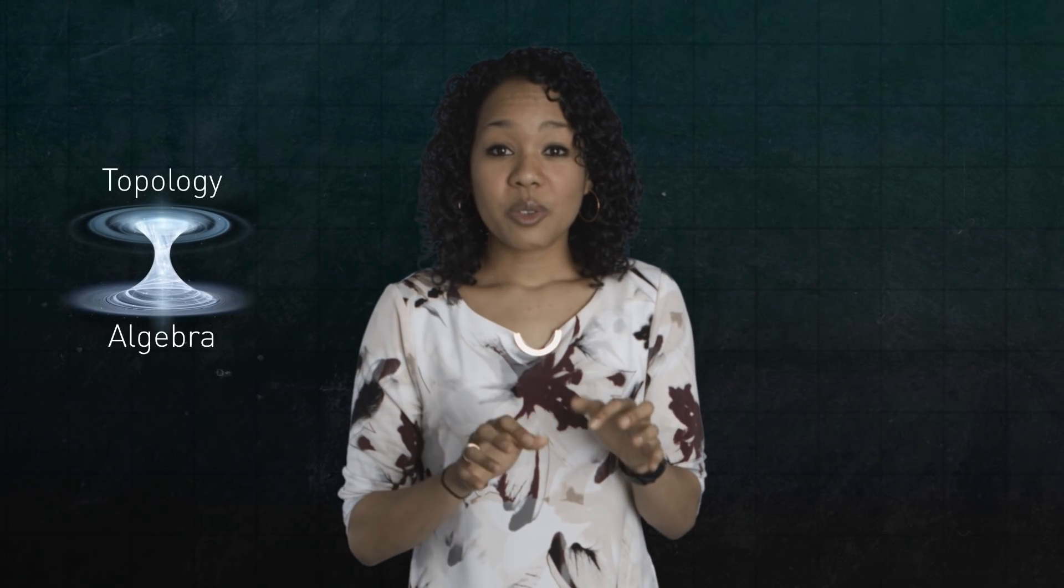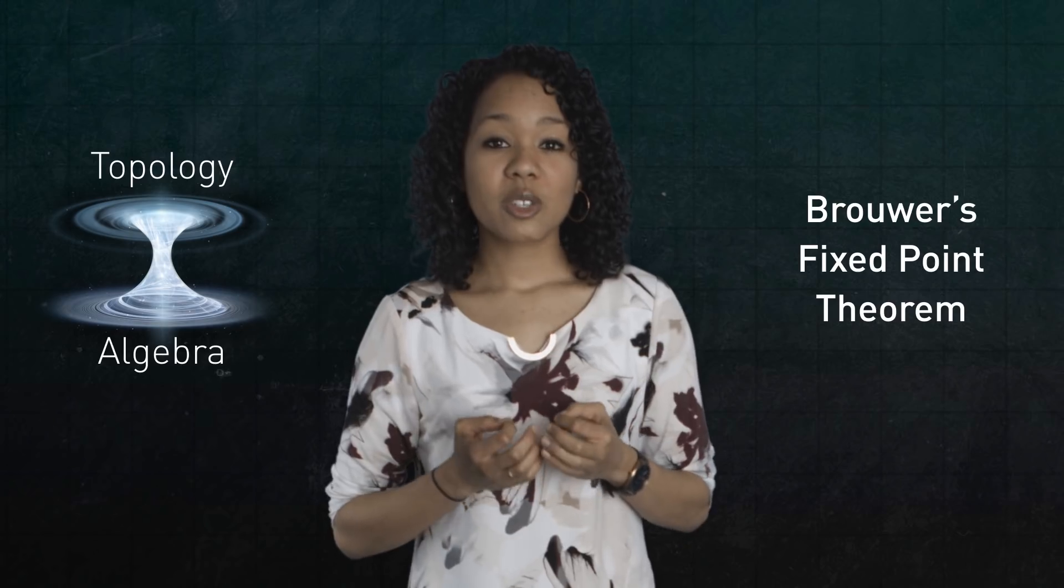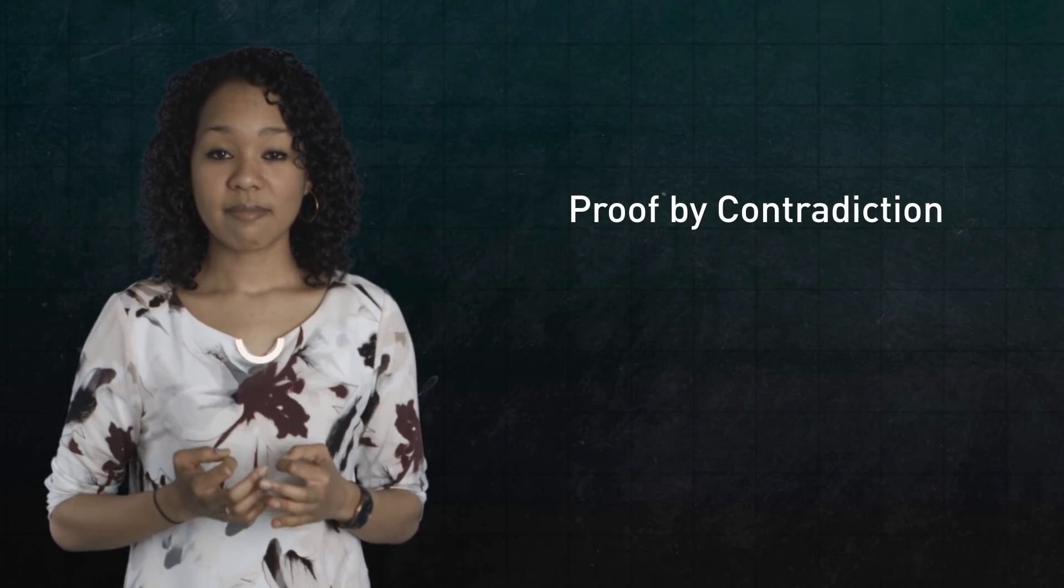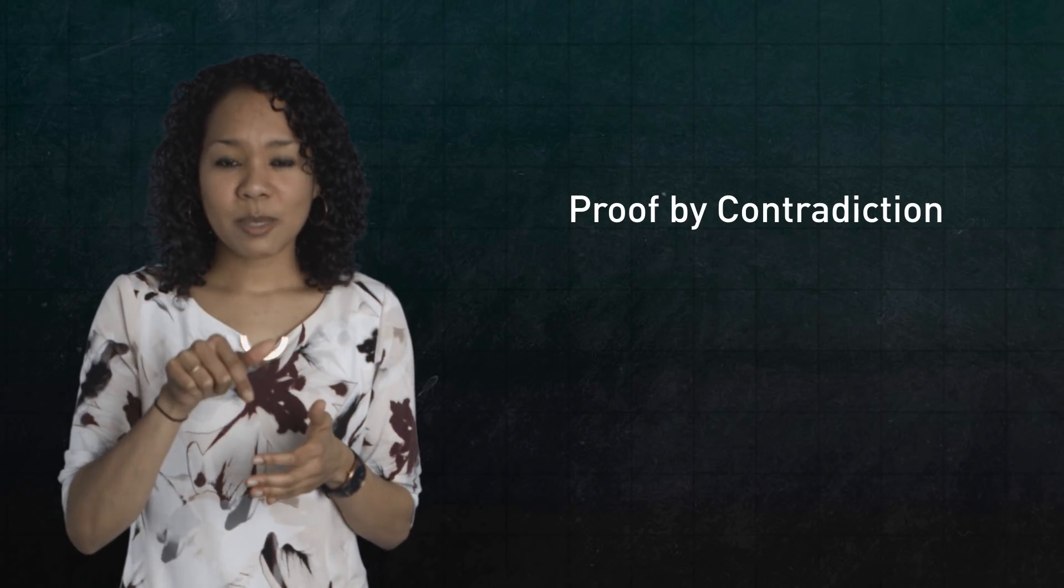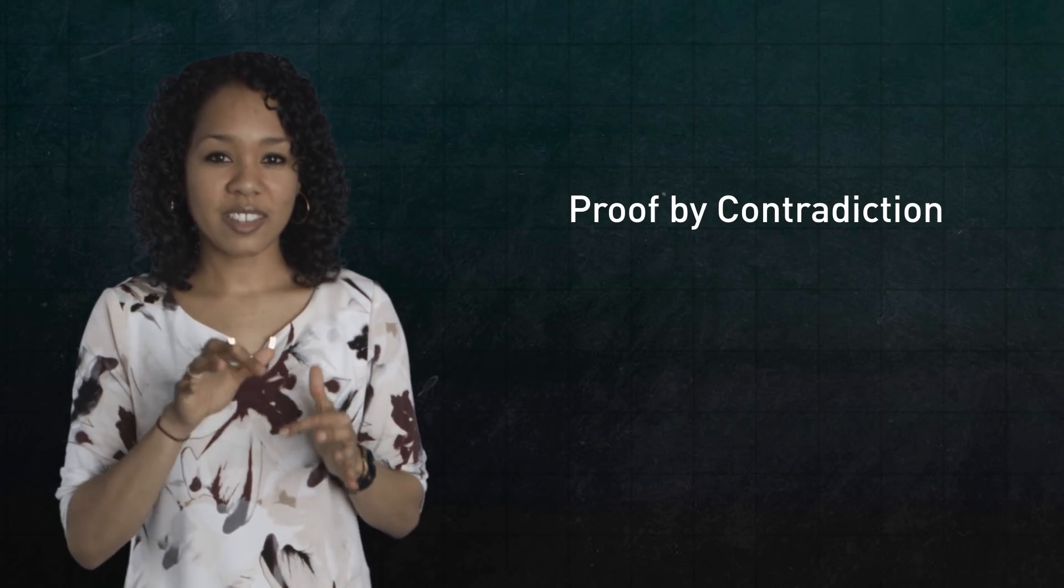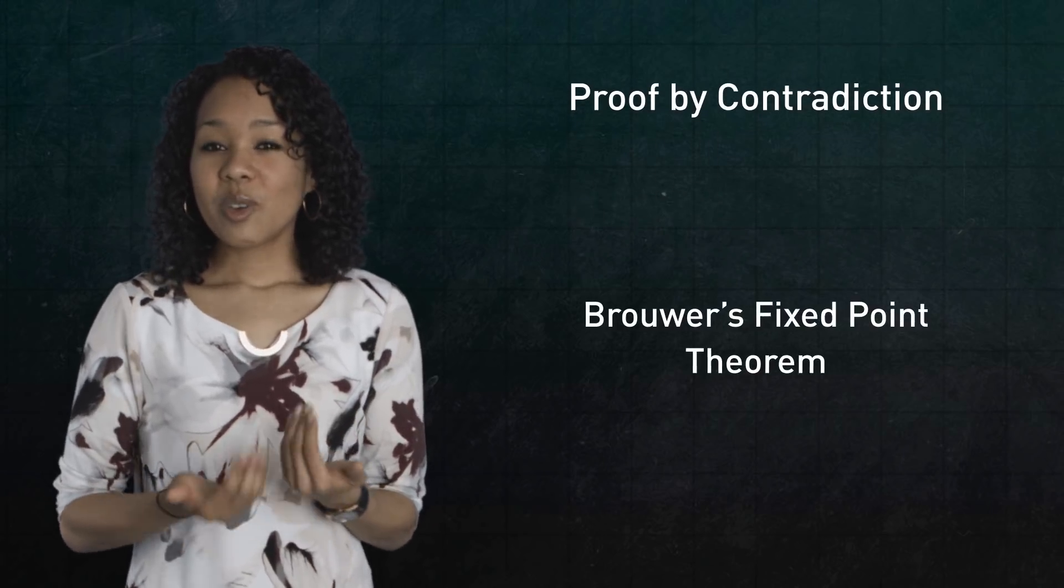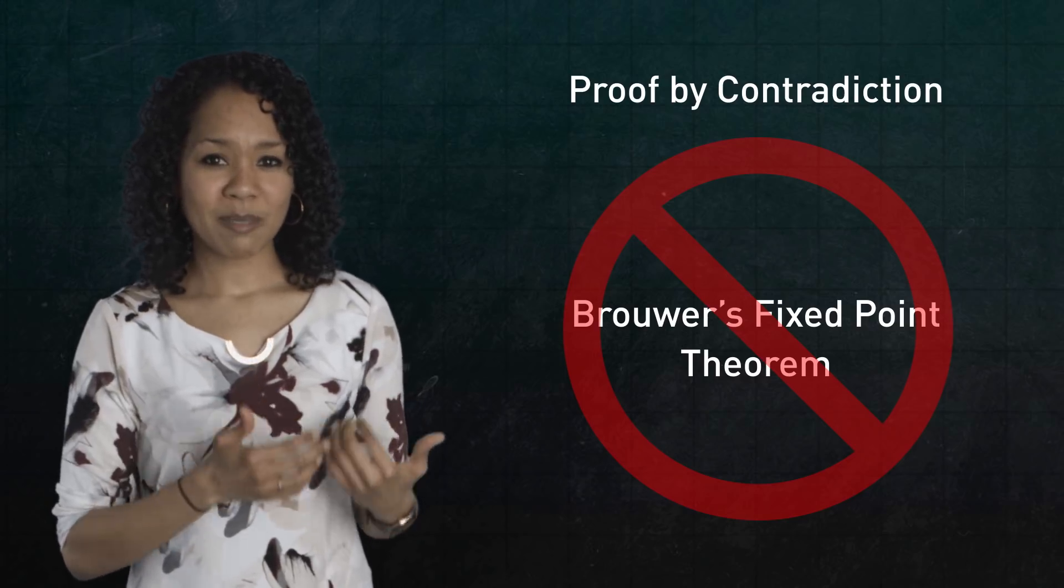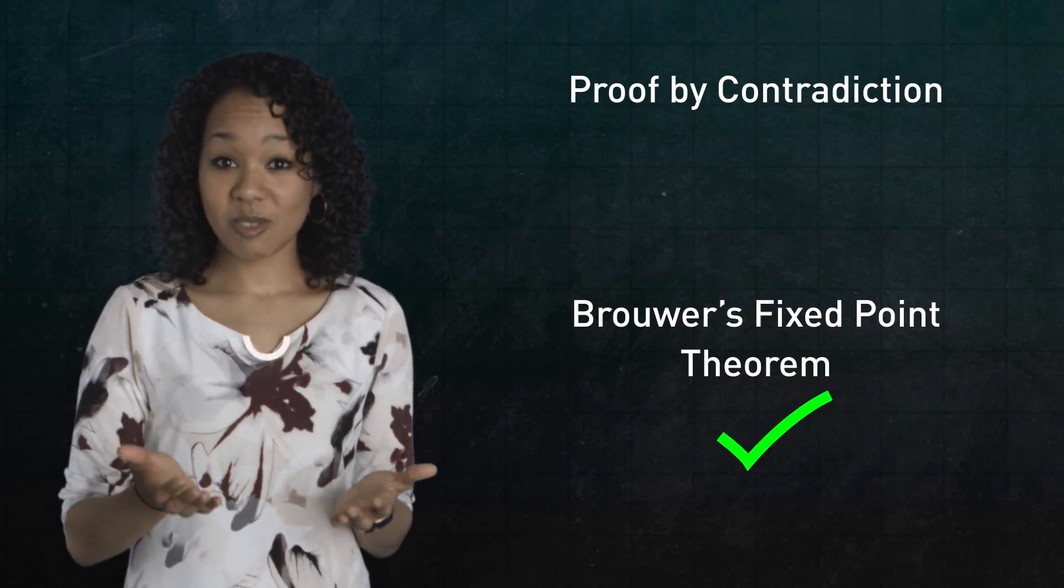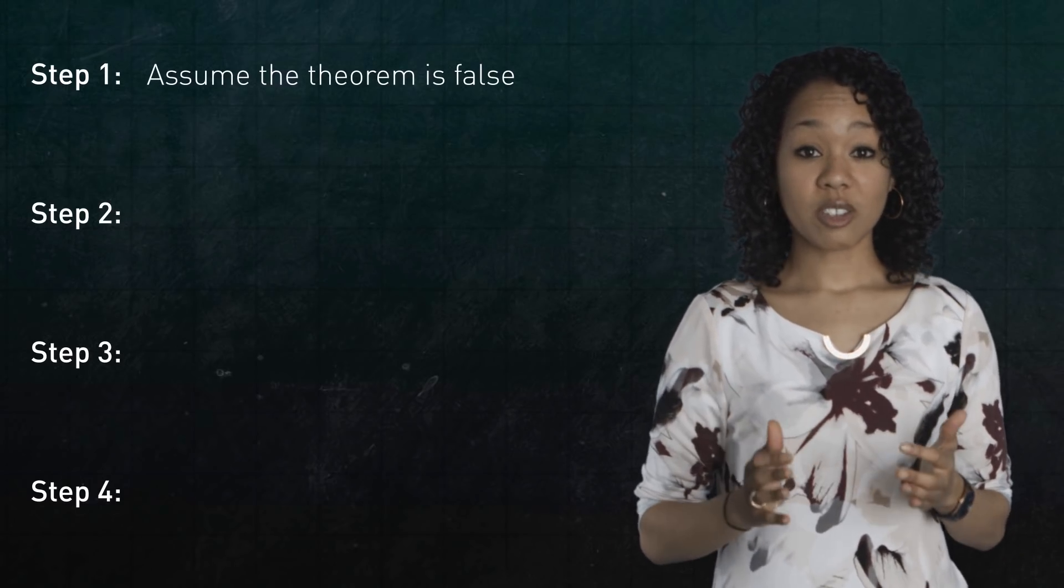So let's use this mirror relationship between topology and algebra to prove Brouwer's fixed point theorem. We'll do it using a proof by contradiction. In other words, we will not prove the theorem directly, so we won't identify the fixed point of every possible deformation of a disk. Instead, we'll prove the theorem indirectly. If we assume the theorem is false and discover a contradiction, we'll know our assumption must have been wrong and therefore the theorem is true.